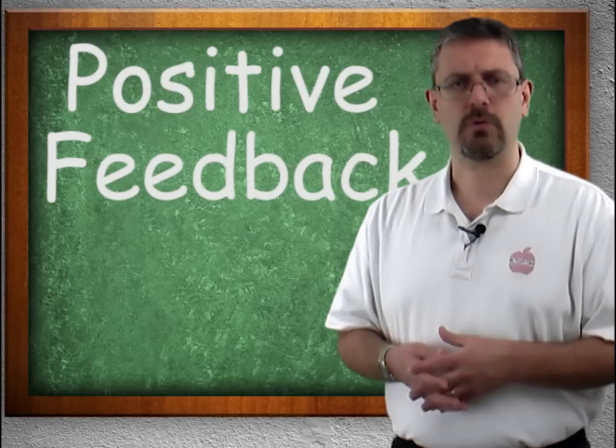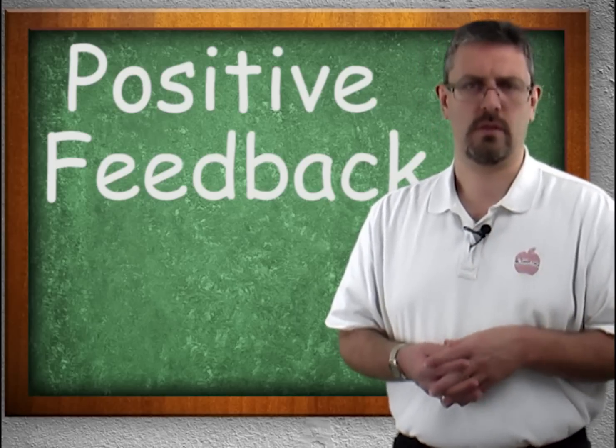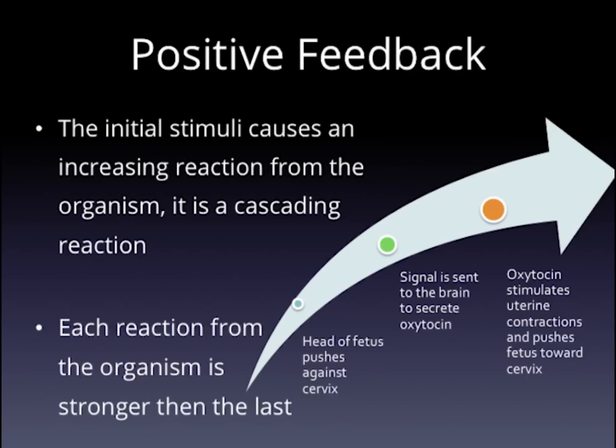A great example of positive feedback is childbirth. The head of the fetus pushes against the cervix, a signal is sent to the brain to secrete oxytocin, which causes uterine contractions and pushes the fetus further toward the cervix. Anyone who has been around someone giving birth knows that the first contraction and the last contraction are definitely different.